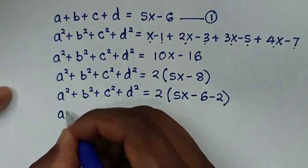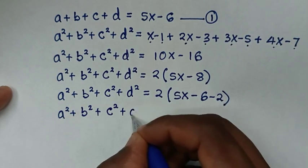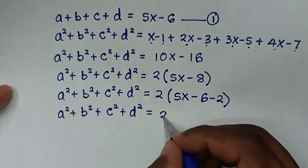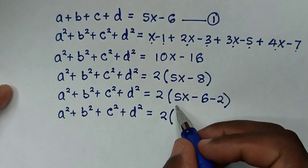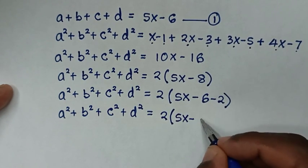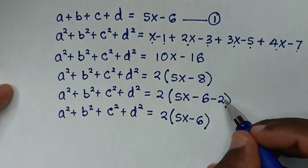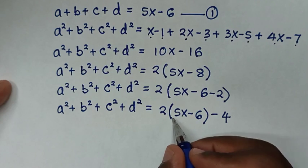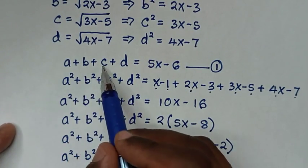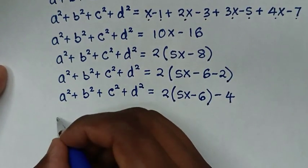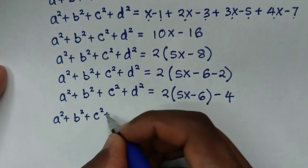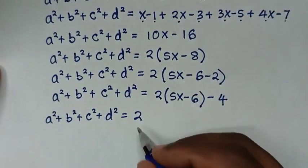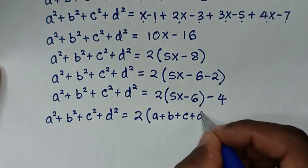So a squared plus b squared plus c squared plus d squared equals 2 times (5x minus 6) minus 4. Distributing the 2 inside gives 2 times (5x minus 6) minus 4. We then substitute equation 1 — where (5x minus 6) equals a plus b plus c plus d — so we get a squared plus b squared plus c squared plus d squared equals 2 times (a plus b plus c plus d) minus 4.